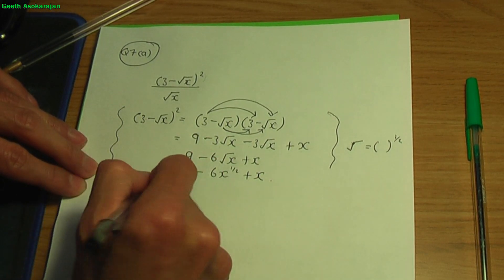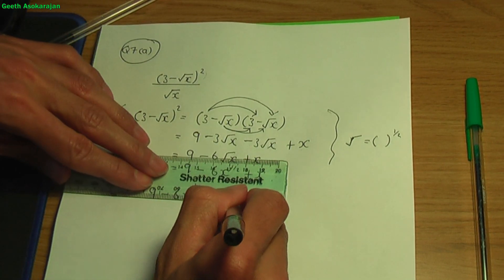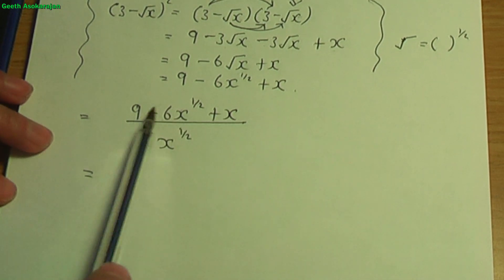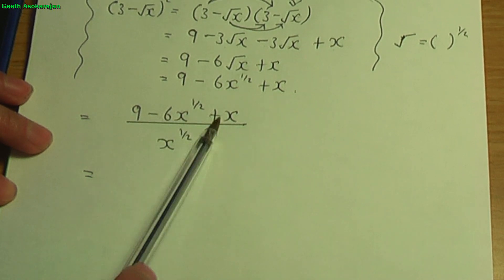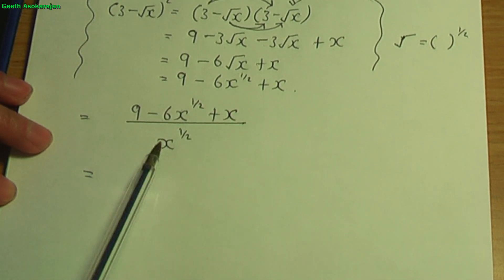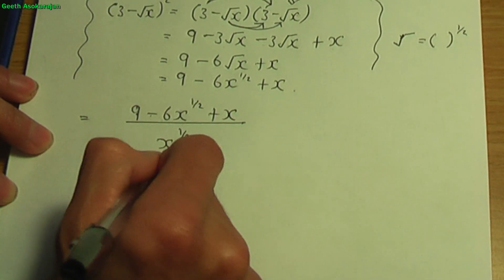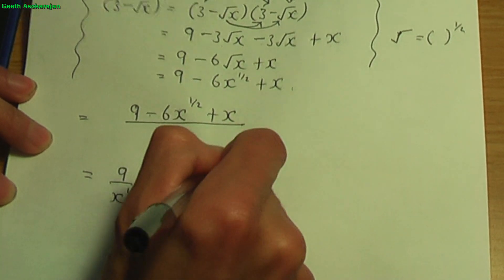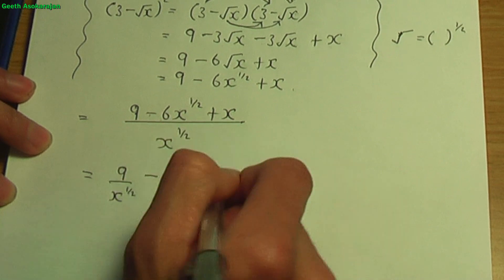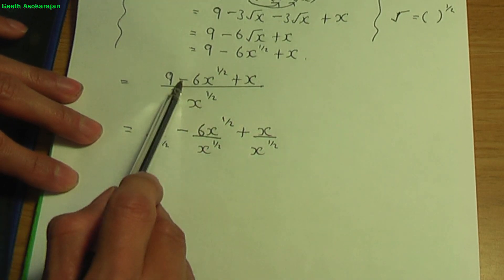Let's incorporate this in the main calculation. So we have 9 minus 6x to the half plus x, when expanded, divided by x to the power of half below. Now we can divide each term on the top by the denominator term — but only when you have pluses and minuses in the middle. So dividing 9 by x to the power of half, minus dividing 6x to the half by x to the half, plus dividing x by x to the half.